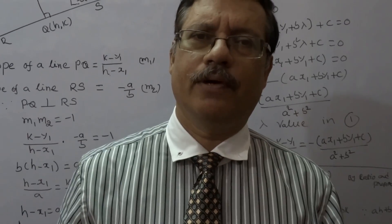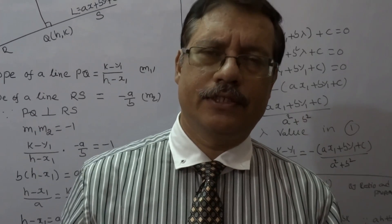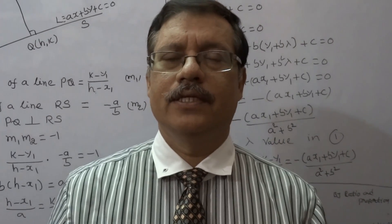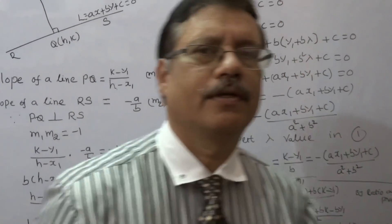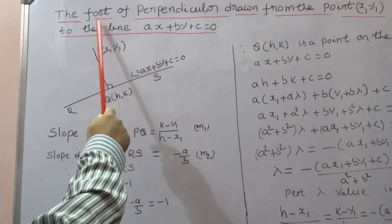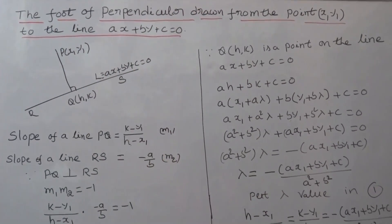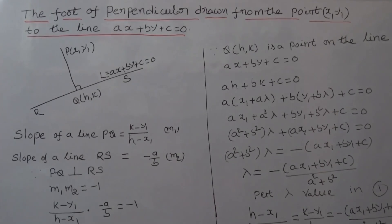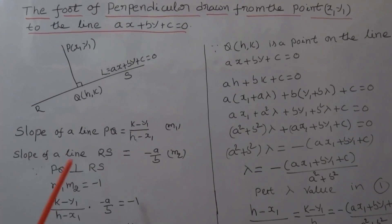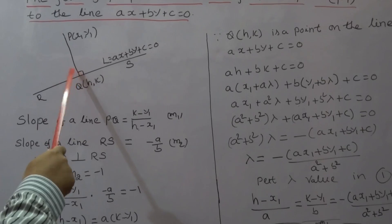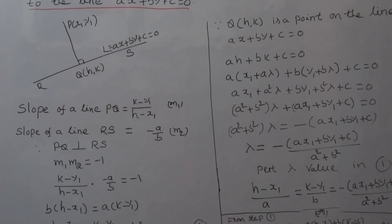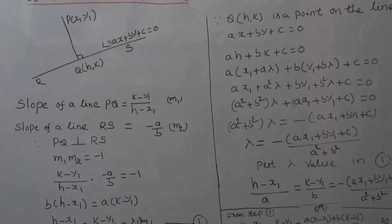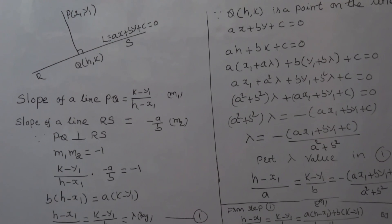Now, we discuss the foot of the perpendicular concept. It is very useful for JEE and also for the state board exams. Here is the concept. The foot of the perpendicular drawn from the point (X1, Y1) to the line AX + BY + C = 0. If the line TQ is perpendicular to the line R, then Q is called the foot of the perpendicular drawn from the point P.